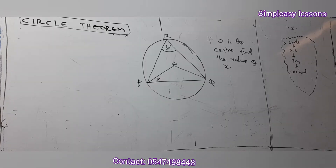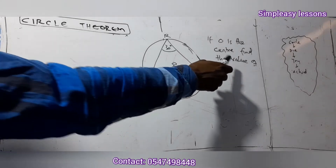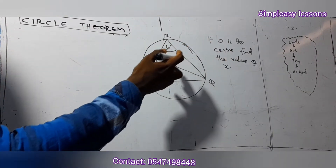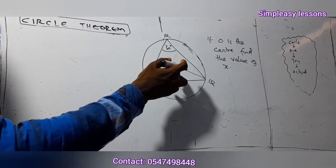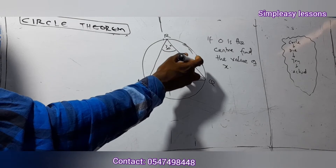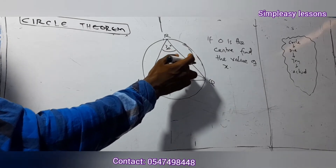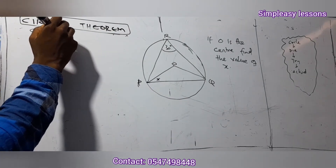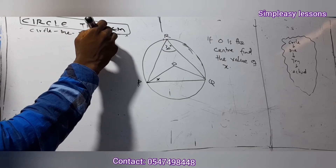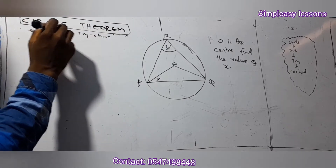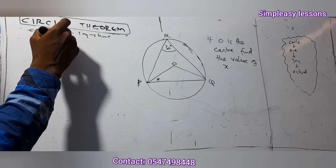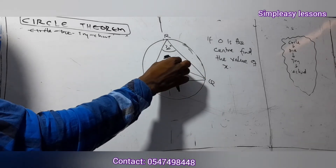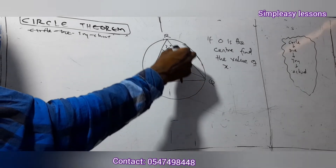New question: if O is the center, find the value of x. Using the mnemonic circle, die, try a chord — there's no circle at a point here, so I cancel circle. There's no diameter either, so I cancel diameter. We move to triangle and chord. There are two triangles: one going to the center and one going to the circumference.